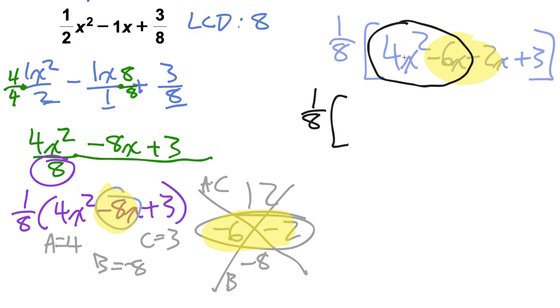Still going to keep that 1 over 8 out front, and it looks like it's not only just an x term but also a 2, because 2 goes into both 4 and 6. Once we factor out a 2x from the first two terms, we have 2x minus 3, and then we want to make sure we copy that 2x minus 3 here.